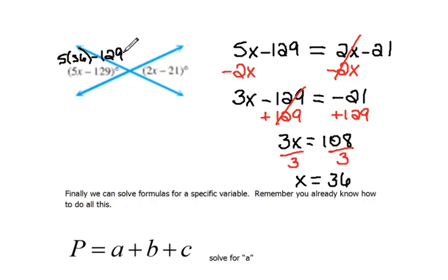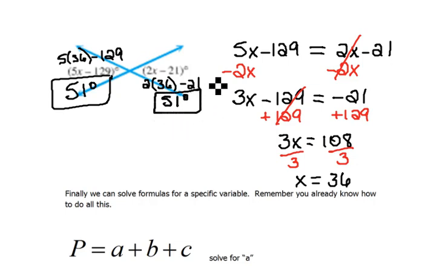So 5 times 36 and then subtract 129 is 51 degrees. Now, over here on the right, we would have to do the same thing. So 2 times 36 minus 21, when we put that in our calculator, we get 51 degrees, which makes sense because since they are vertical angles, they should be the exact same measure, and they are.